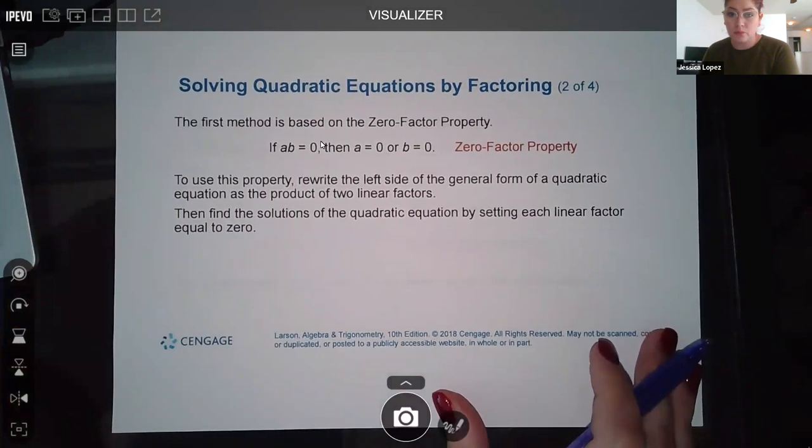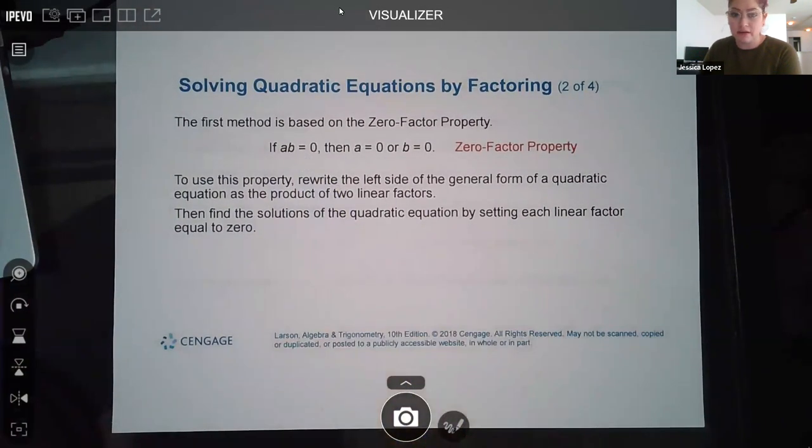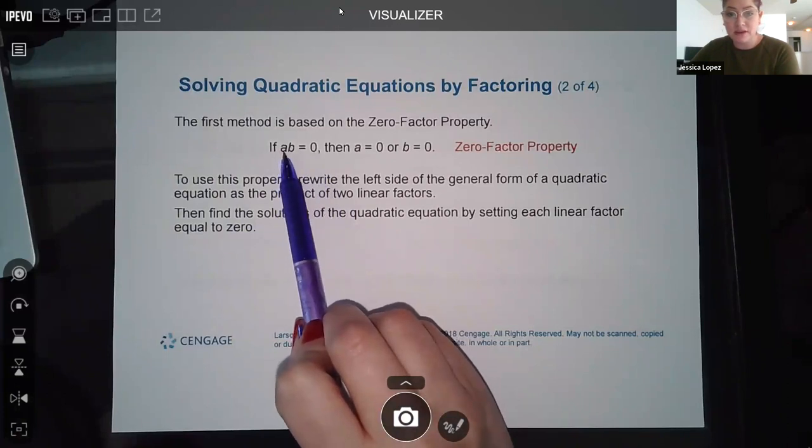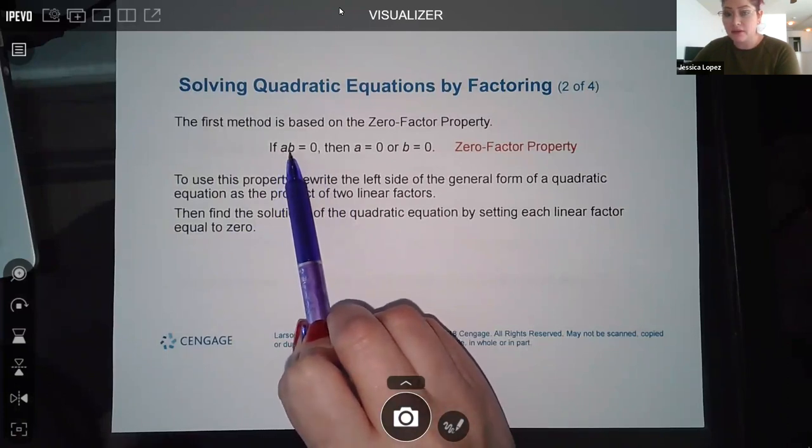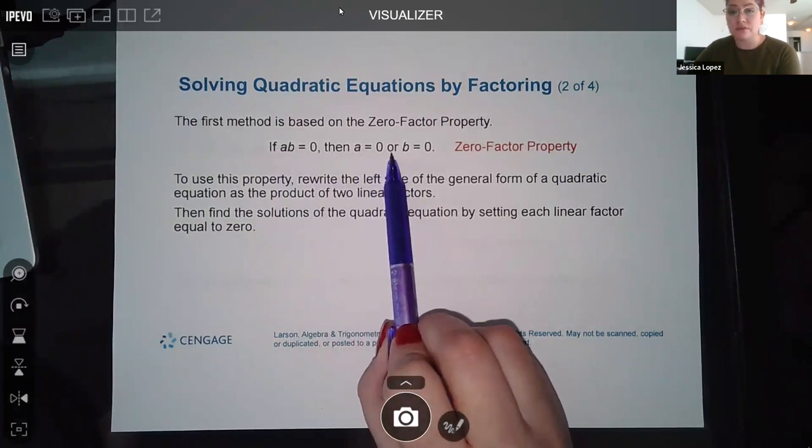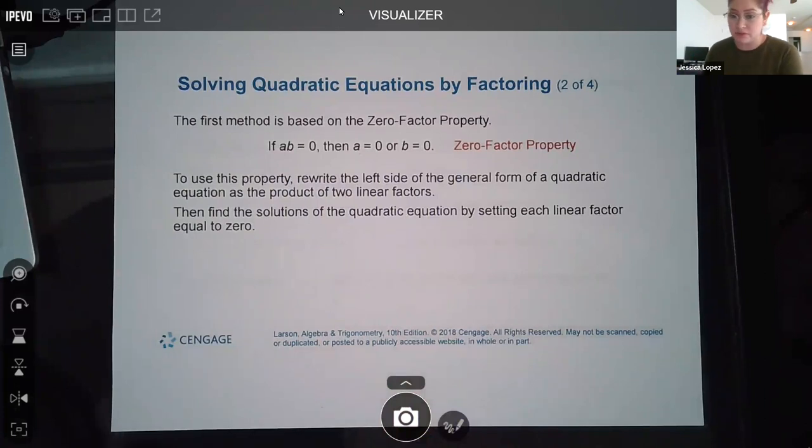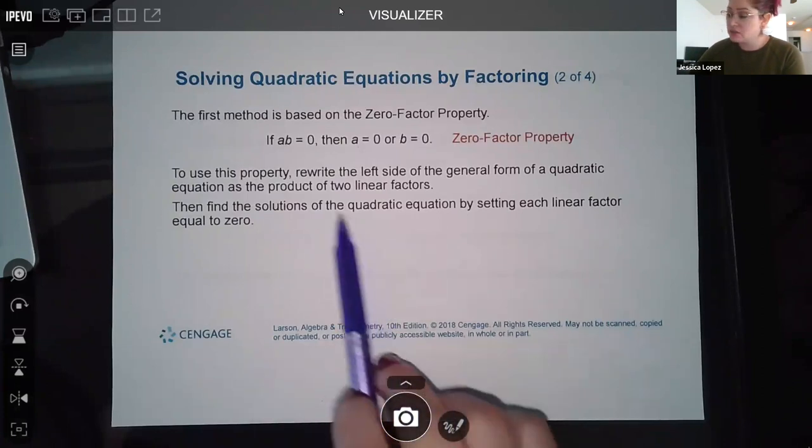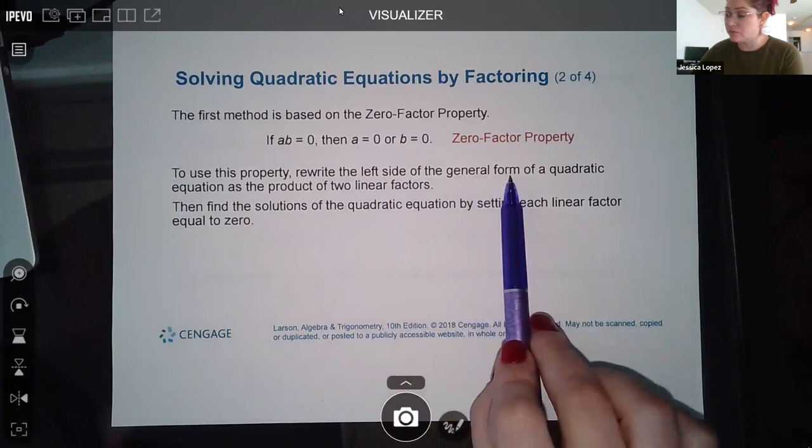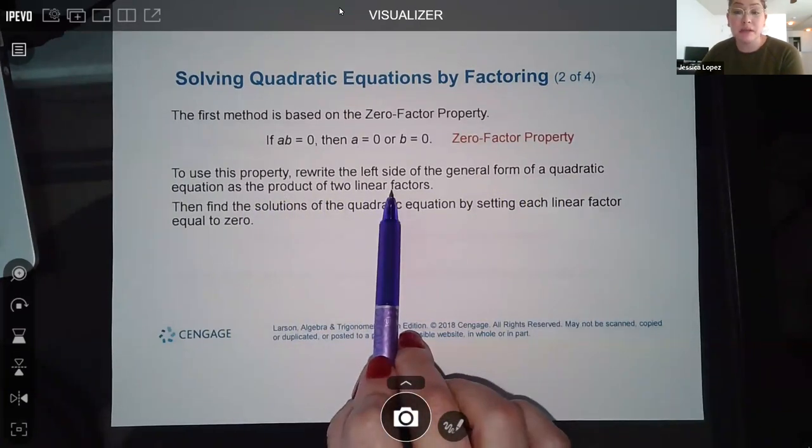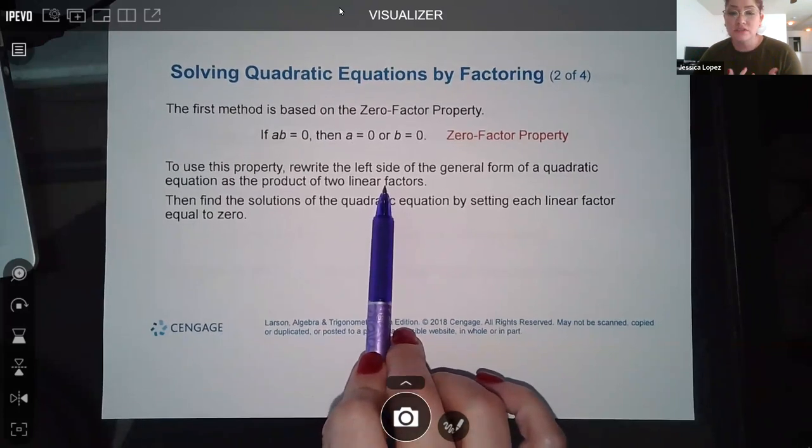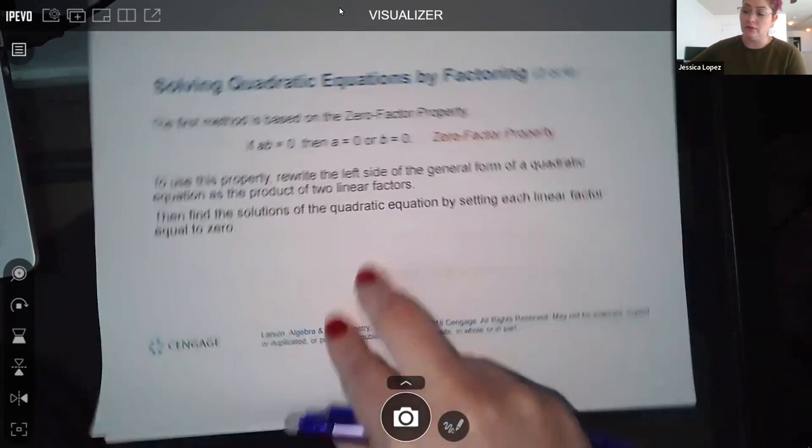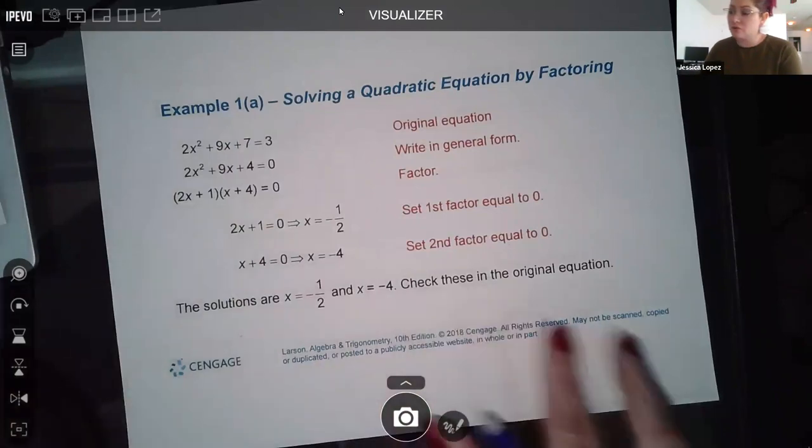So one thing that's helpful to know is that when you do have a product, the only way that this product can equal zero is if this factor equals zero or the second factor equals zero. And so then the first factor would have to equal zero or the second factor would have to equal zero, or both could be equal to zero. So in order for us to solve equations using this property, essentially what we do is we rewrite the left-hand side of the general form as the product of two linears. What does that mean? That means you factor the left-hand side. Once you factor the left-hand side, you're going to set each one of those factors equal to zero.